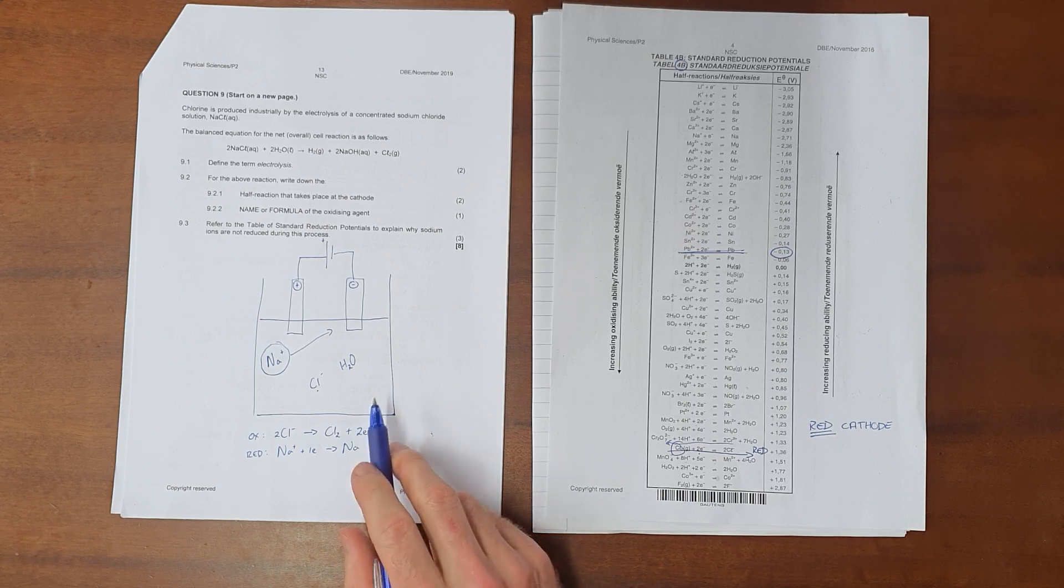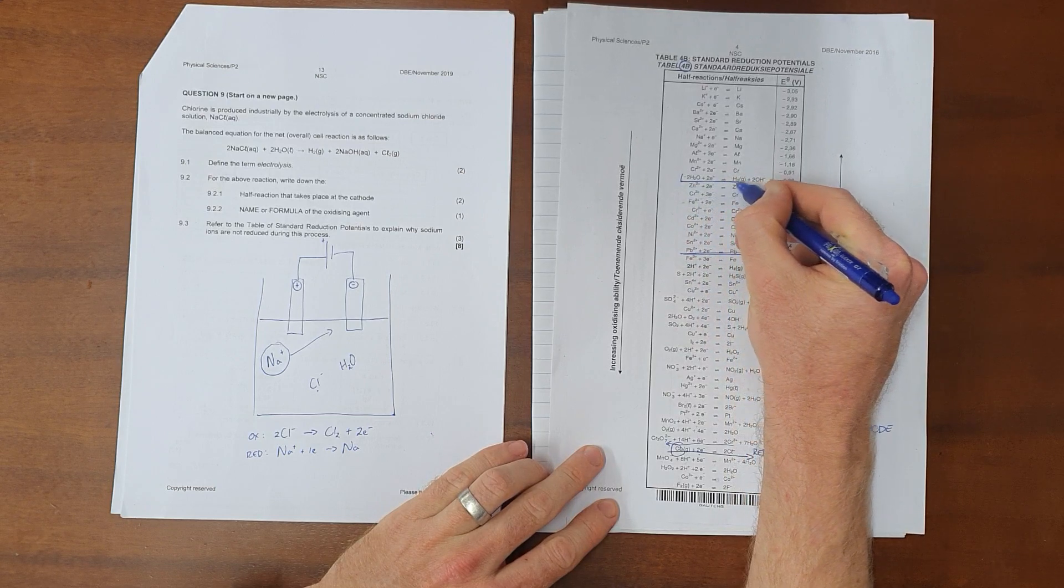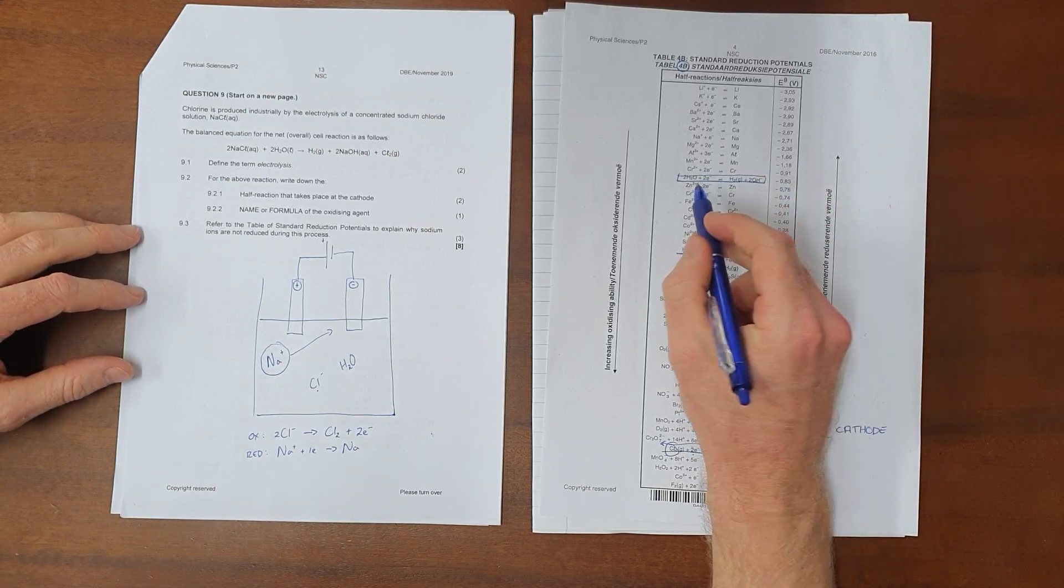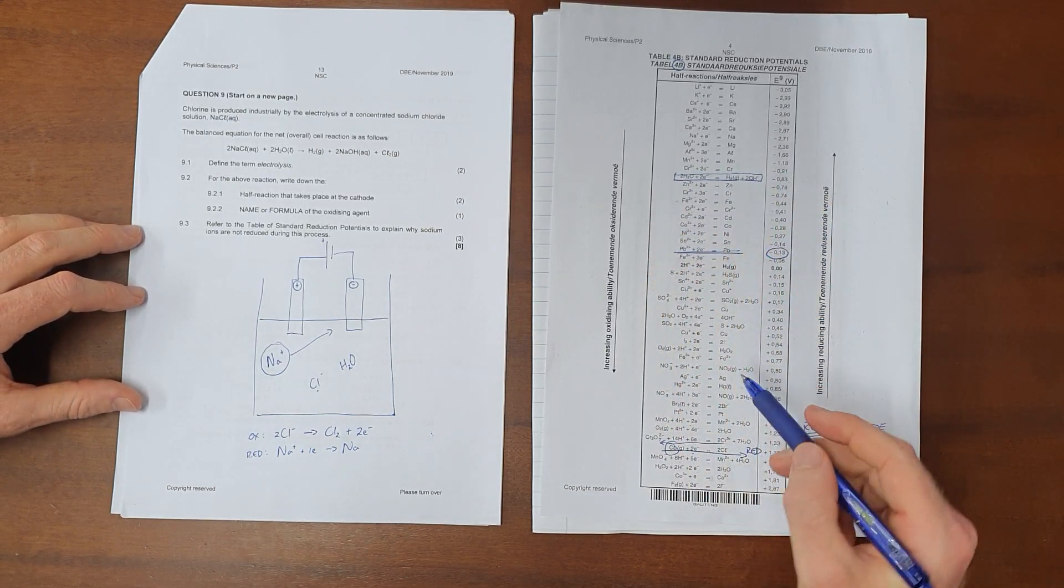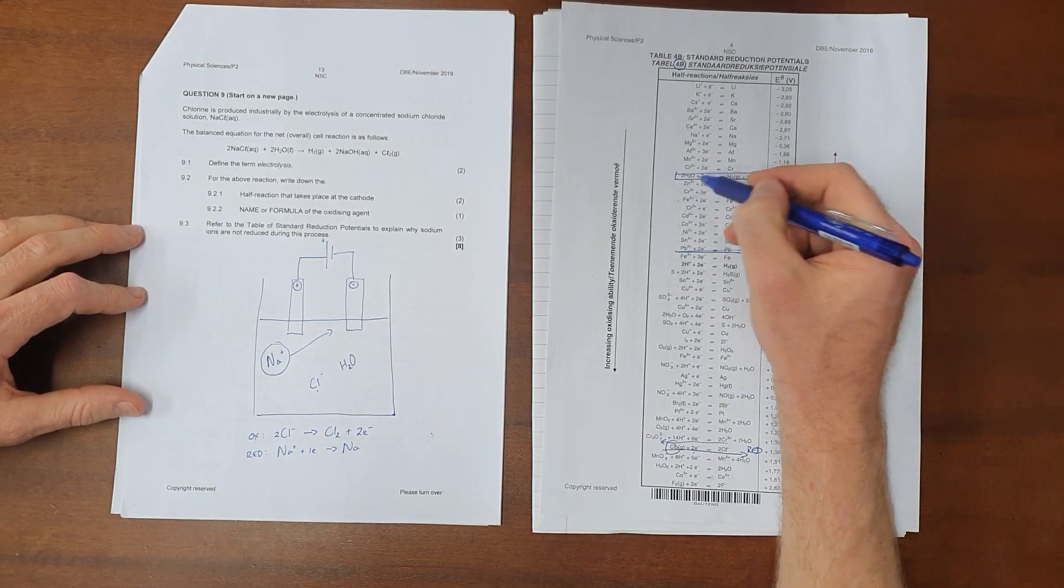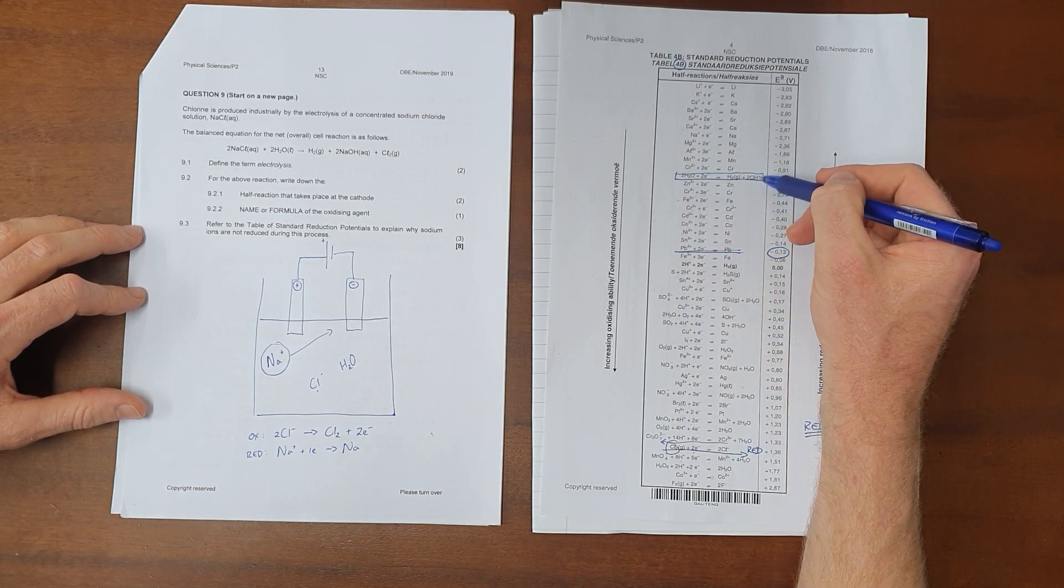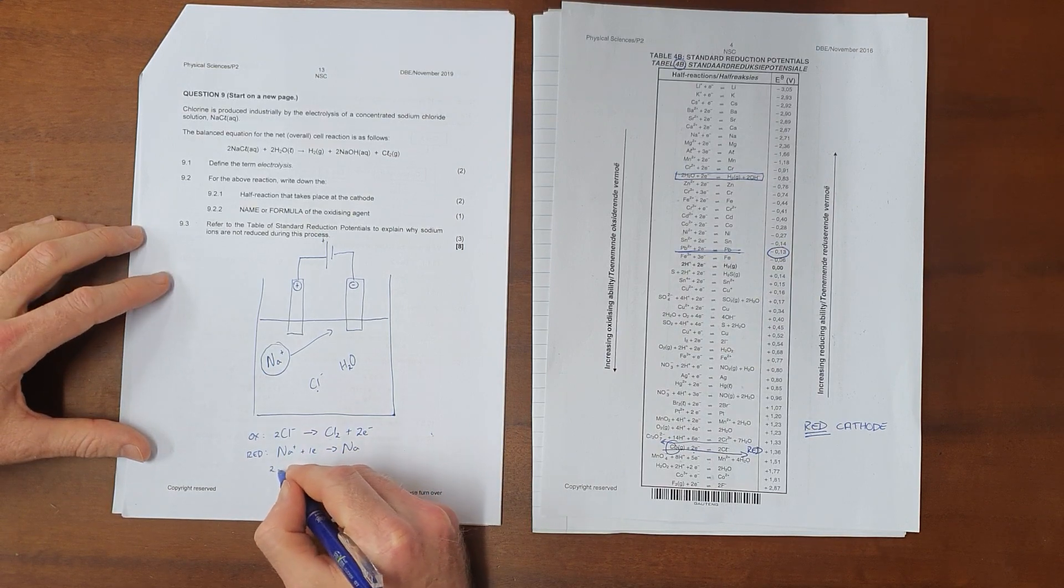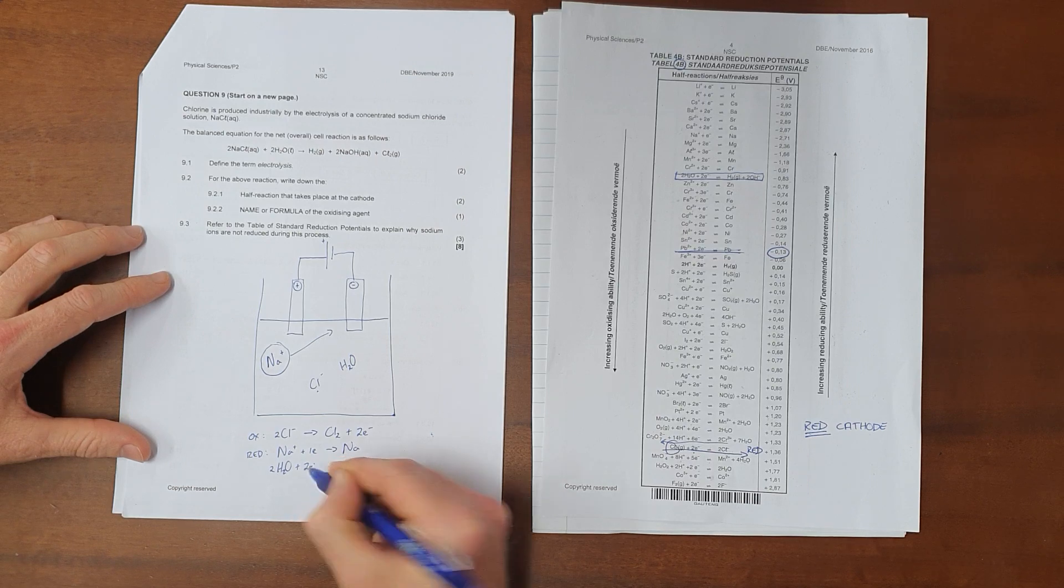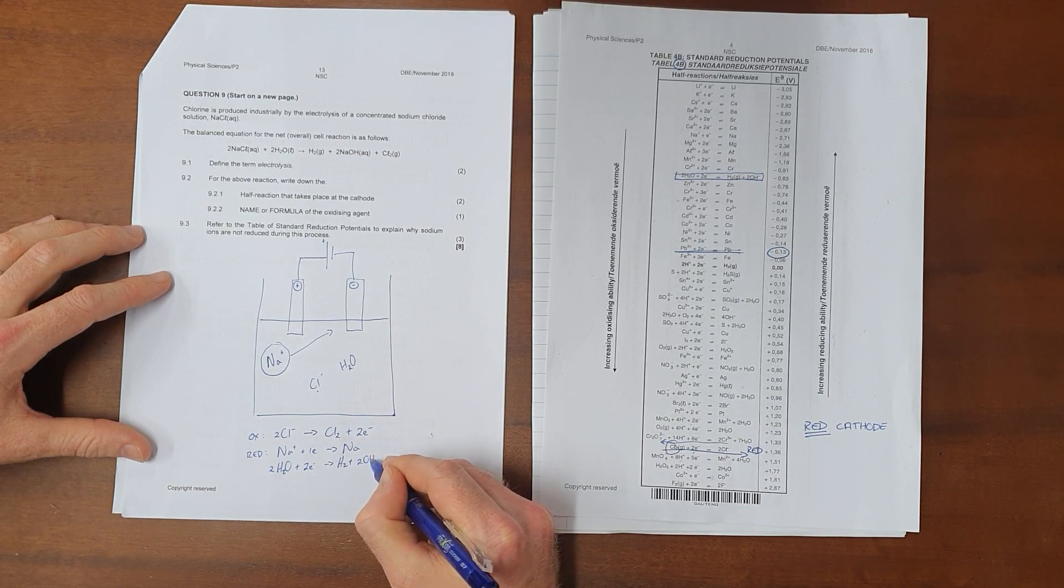But it's important to remember that there is also water present, and the water reaction that we are always going to be dealing with, the water half reaction specifically, that we will find on this table of standard reduction potentials, is always going to be this reaction. There are a number of reactions that include water, but at this level we only deal with water that undergoes reduction to give off hydrogen gas and hydroxide. And so we can write that down as a potential half reaction that's going to take place. That is water that gains two electrons to form hydrogen gas and two hydroxide ions.